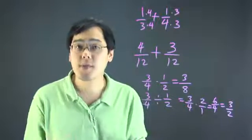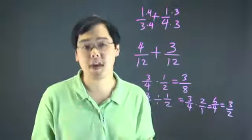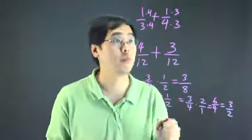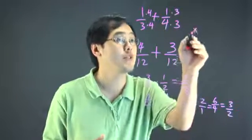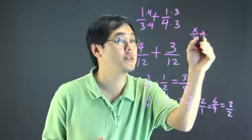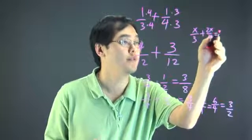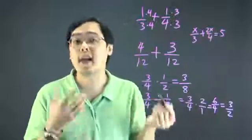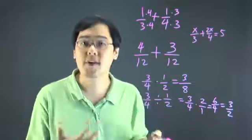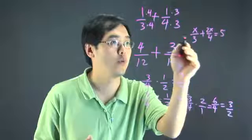Now, more often than not though, the numerator does play off the denominator's lead. For example, if you have this equation, x/3 plus 2x/4 equals 5. Again, to solve this kind of equation, you have to find the least common denominator of 3 and 4, which is 12.